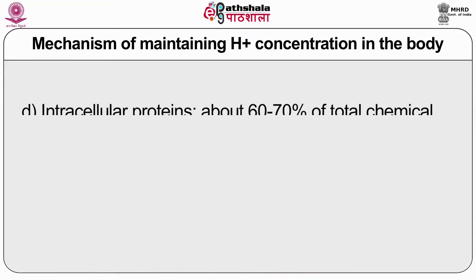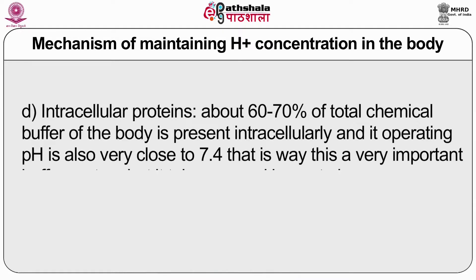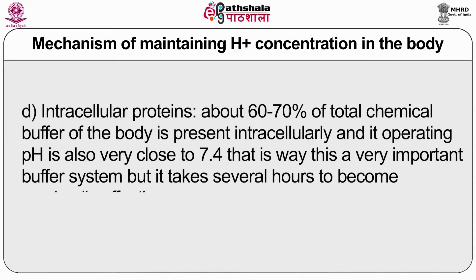Fourth is the intracellular protein buffer. About 60 to 70 percent of the total chemical buffer in the body is present intracellularly, and its operating pH is very close to 7.4. This is a very important buffer system, but it takes several hours to become maximally effective.